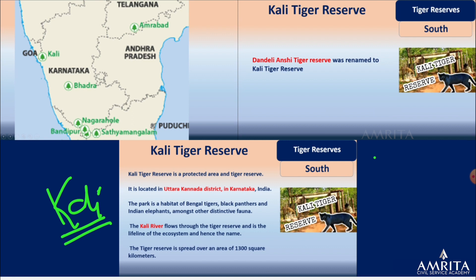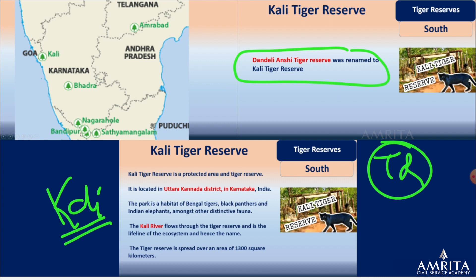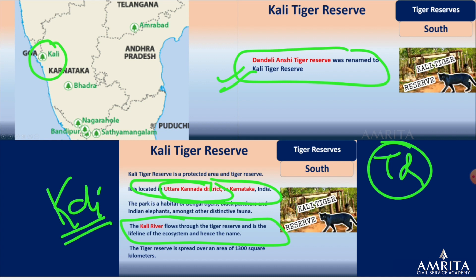Discussing Kali Tiger Reserve — I've covered all 50 tiger reserves in the tiger reserve series, which I highly recommend. Kali Tiger Reserve: a question could be asked about its renaming — its earlier name was Dandeli-Anshi Tiger Reserve. The Kali River passes through this tiger reserve, located in Uttara Kannada district, near Goa.